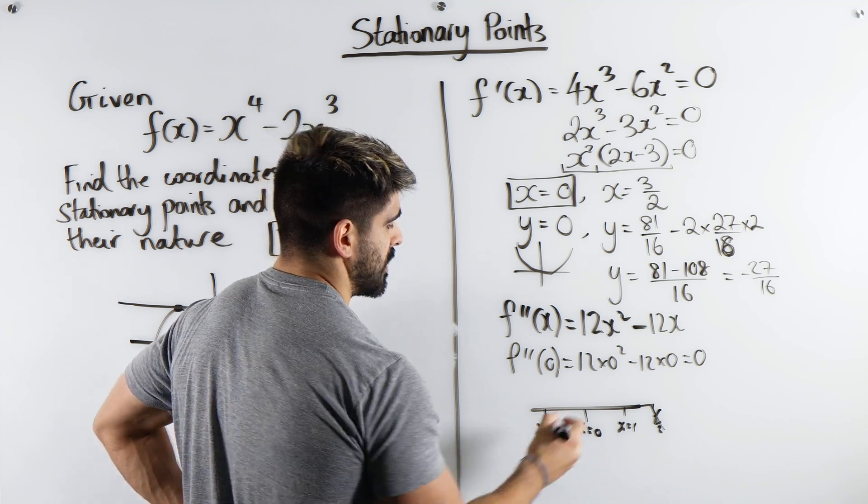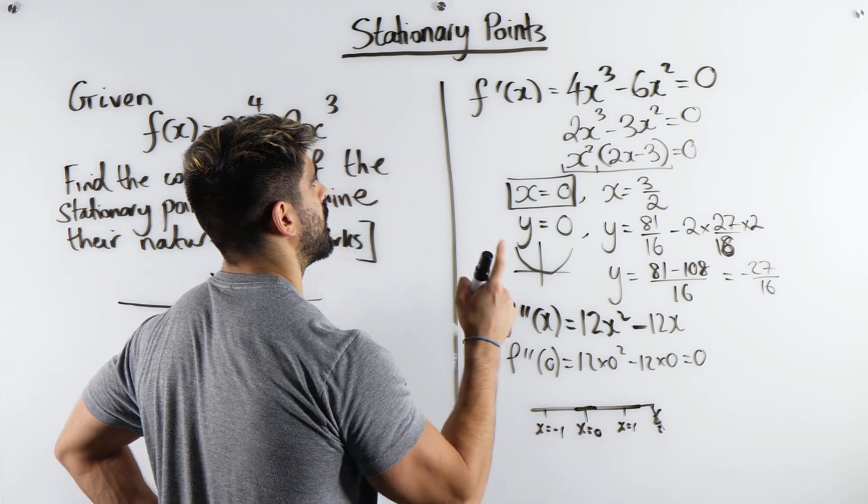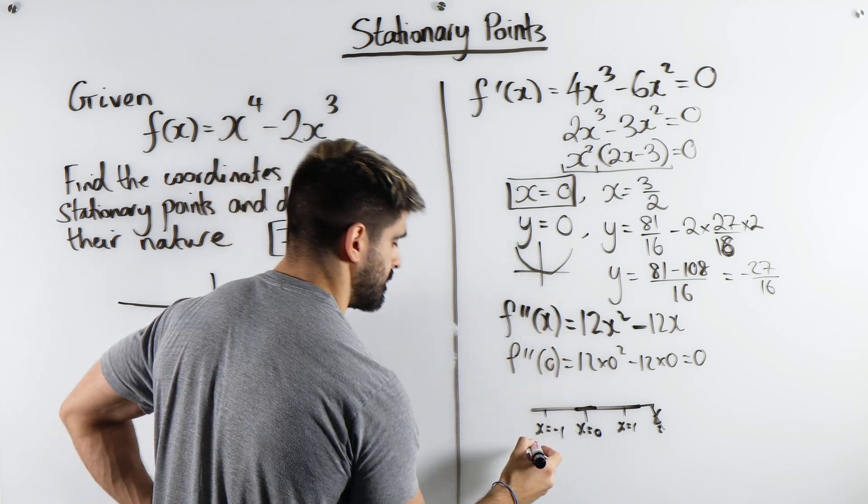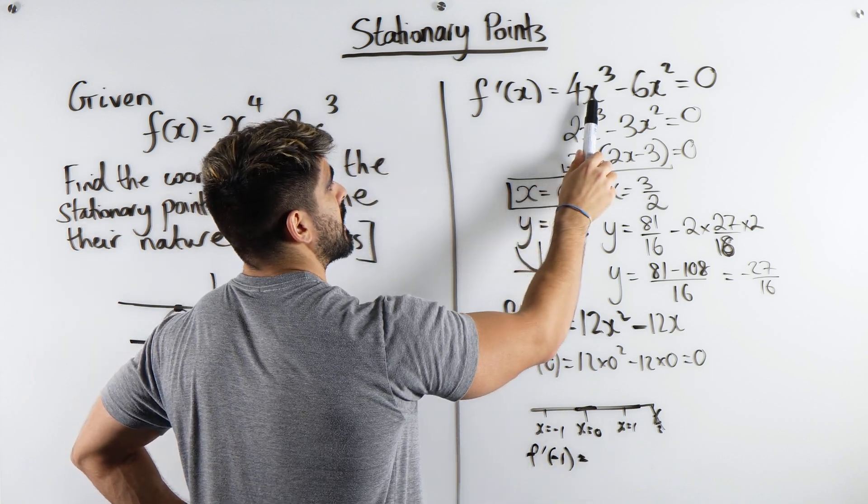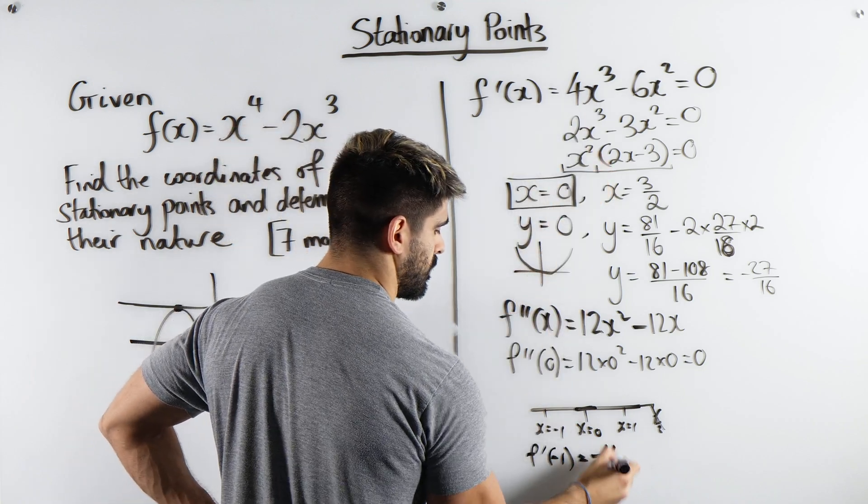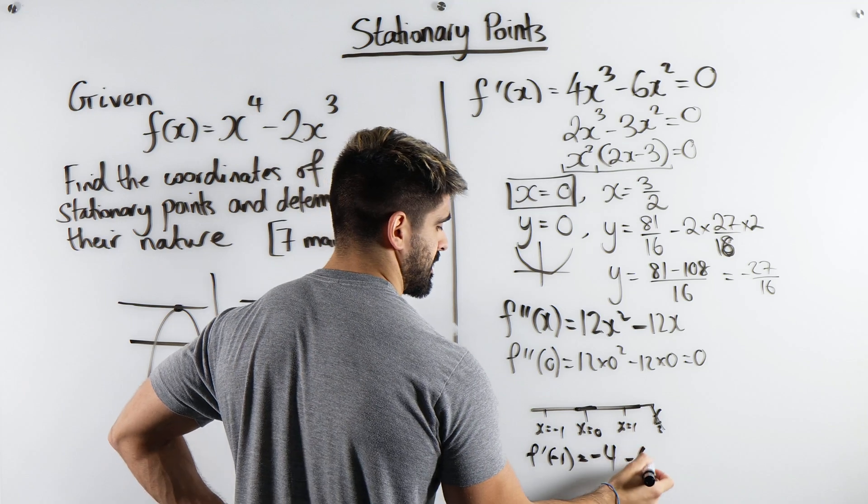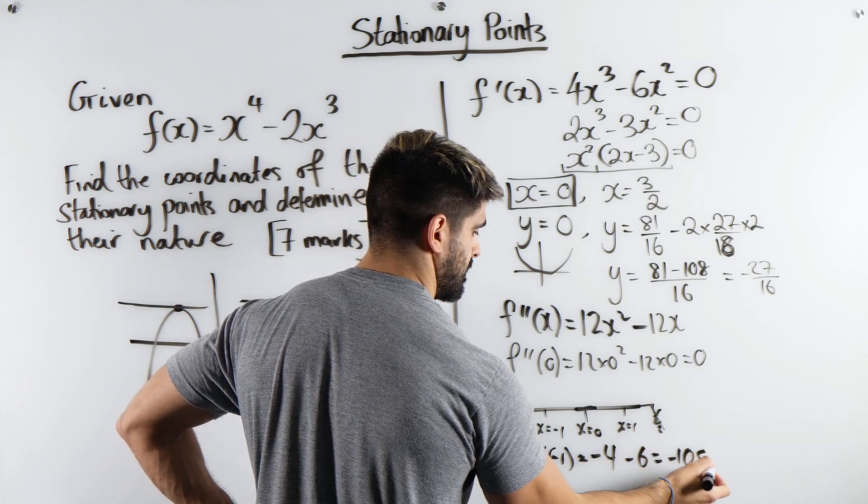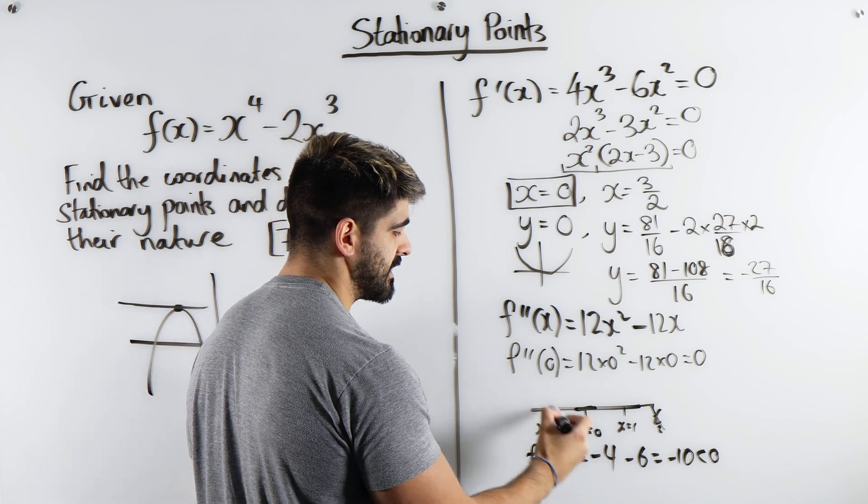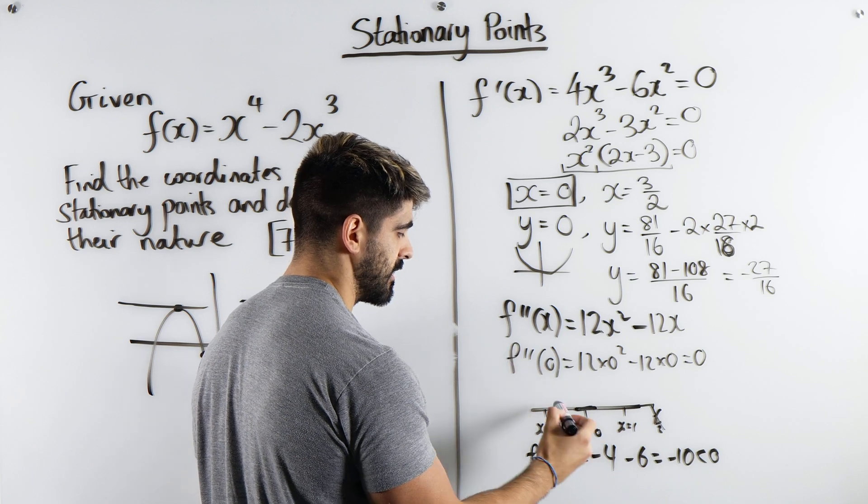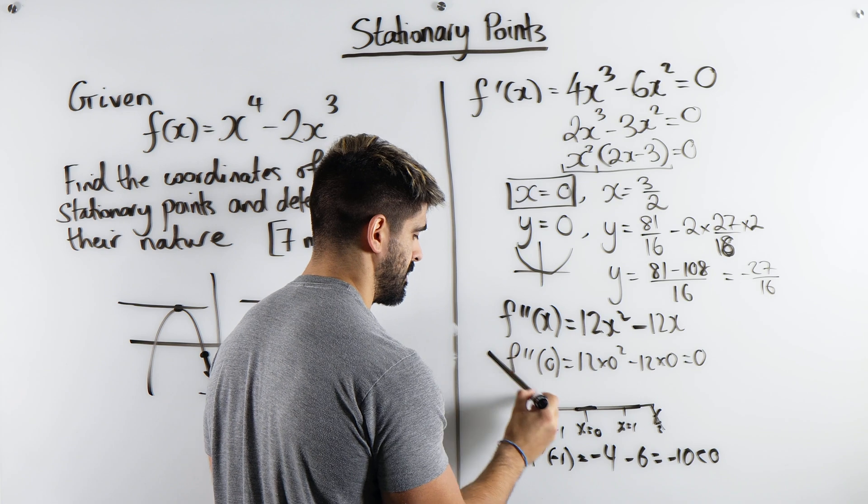So we know the gradient here is 0. What happens when we sub in minus 1? Remember, we're subbing it into here. So f' of minus 1, we get minus 1 cubed, which is minus 1, times 4 minus 4, minus 1 squared is 1. We just get minus 6. So you get minus 10 less than 0. So the gradient here is negative, it's downward sloping. It's downward sloping. It might look something like this.